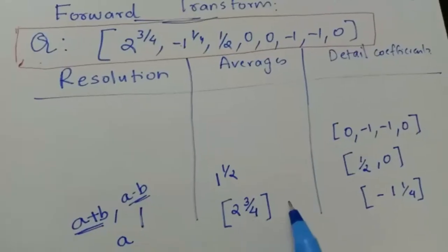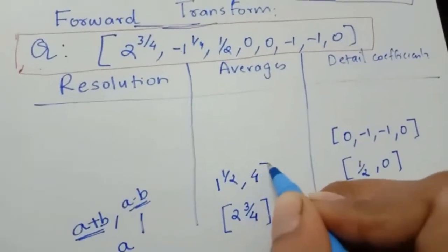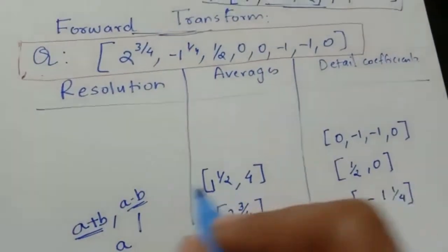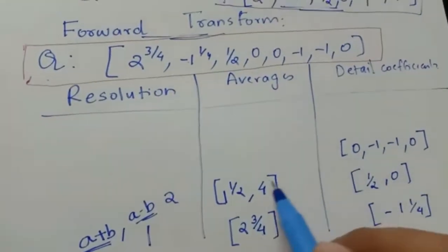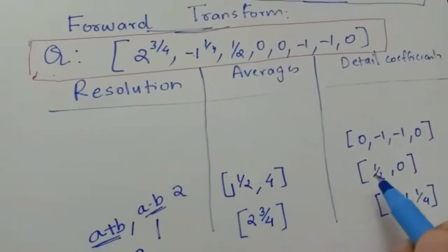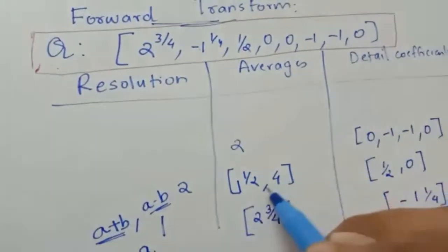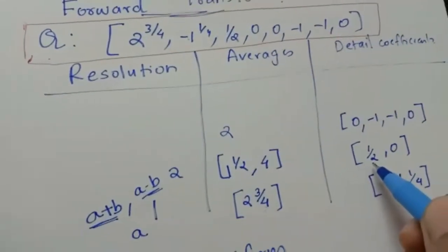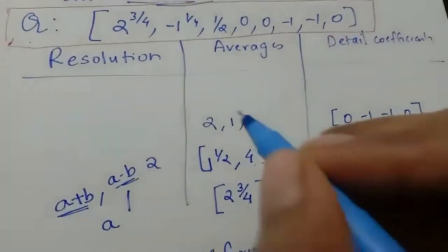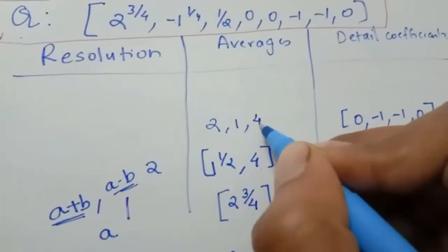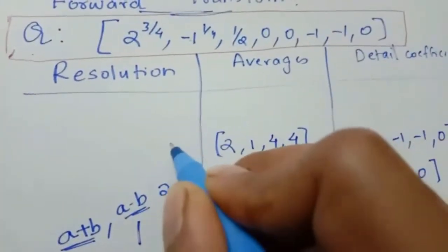Next: 1½ + ½ = 2, and 1½ - ½ = 1. Then 4 + 0 = 4, and 4 - 0 = 4. So the number of elements is now 4. Then: 2 + 0 = 2, 2 - 0 = 2, 1 + (-1) = 0, 4 + (-1) = 3, 1 - (-1) = 2, 4 - (-1) = 5, 4 + 0 = 4, 4 - 0 = 4.